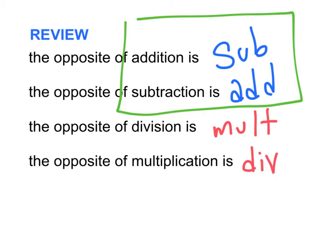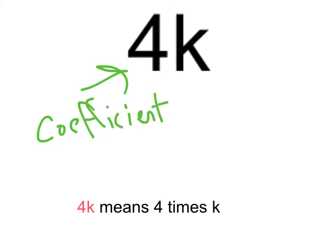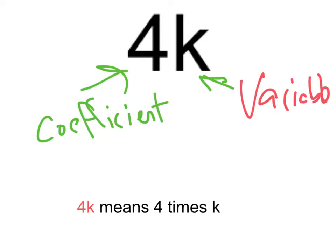So these go hand in hand. Let's take a look at what I mean by this. Here we have an example of multiplication. On the left side, we have what we refer to as the coefficient, and on the right side we have the variable. These are being multiplied, so 4k means 4 times k. So if k was, for example, 3, it would be 12.